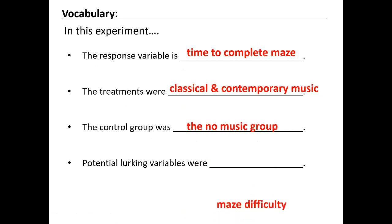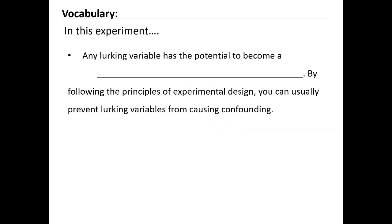What are some potential lurking variables? Well, maze difficulty — perhaps some people had harder mazes and that makes it look like it takes more time. In this experiment, when you have lurking variables, they have the potential to become confounding variables. A confounding variable is when a lurking variable messes up your results. Lurking variables are things that we aren't testing for that may explain our results. If they do explain our results and are screwing up our study, then they become a confounding variable.